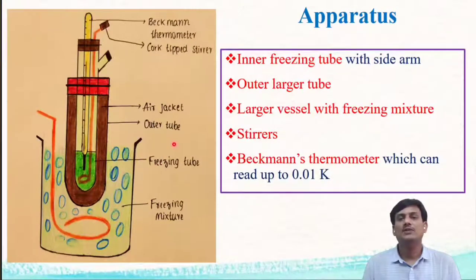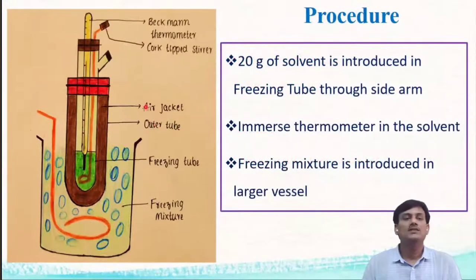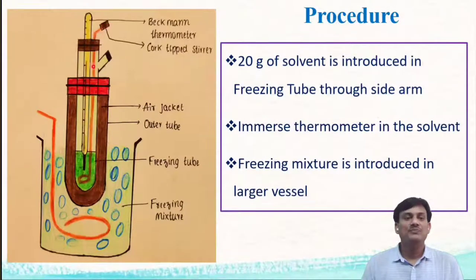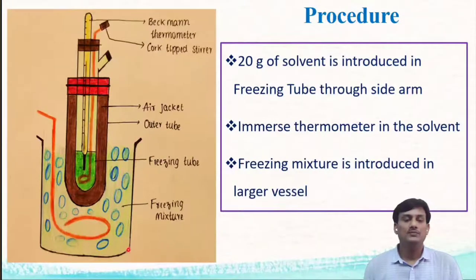In the procedure, we introduce 20 grams of the solvent into the freezing tube through the side arm. Next, we immerse the Beckman's thermometer into the solvent to measure the freezing point. Then we dip the platinum stirrer into the solvent in the freezing tube. The stirrer homogenizes the solvent. Next, we take the freezing mixture in the cooling bath.